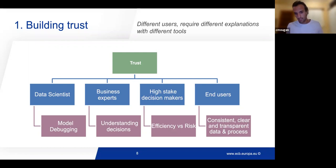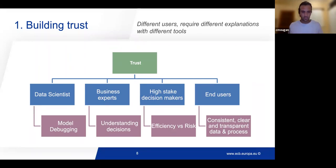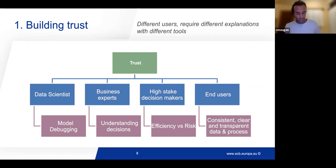For high-stake decision makers, they look at machine learning applications in terms of efficiency versus risk. They don't need to know the exact economic or mathematical behavior — they want to look at the trade-off. They want to see what the department is improving by deploying this, and what the risk is. When we do automatic decision making, there are chances that the application doesn't go well, and they may be the ones accountable, so we need to ensure they trust the system and understand the risk.